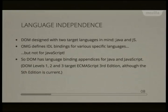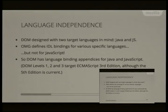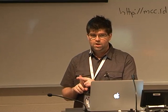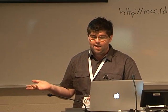The advantage of writing interfaces using an IDL language is language independence. This is meant to be abstract, with particular concrete implementations of the APIs in specific languages. The DOM was designed with two target languages in mind: Java and JavaScript. We all know where Java went on the web platform — basically nowhere — so JavaScript is really the main one we're interested in now.